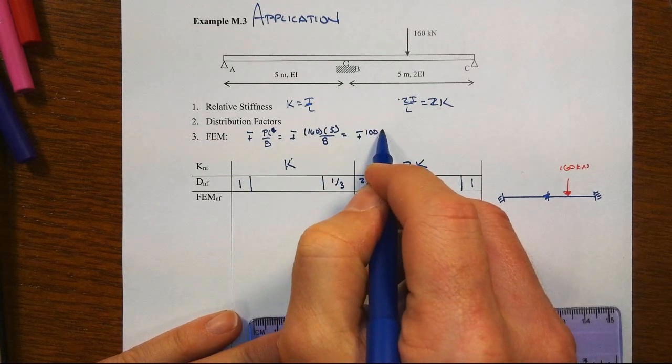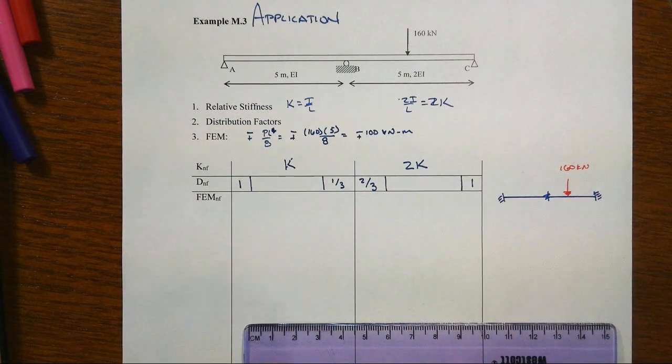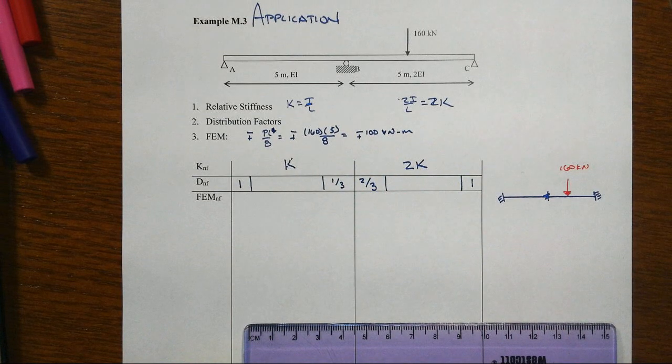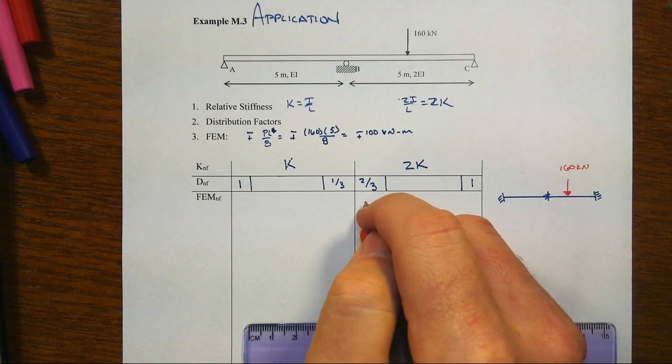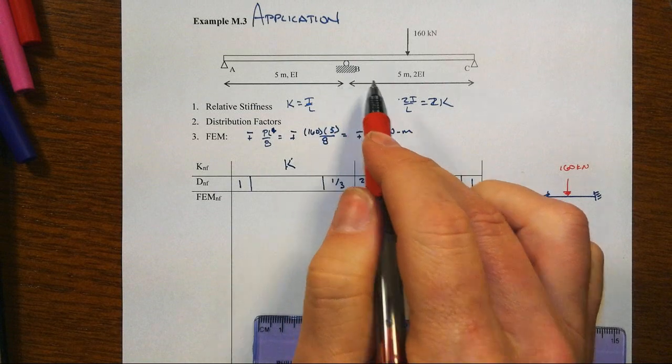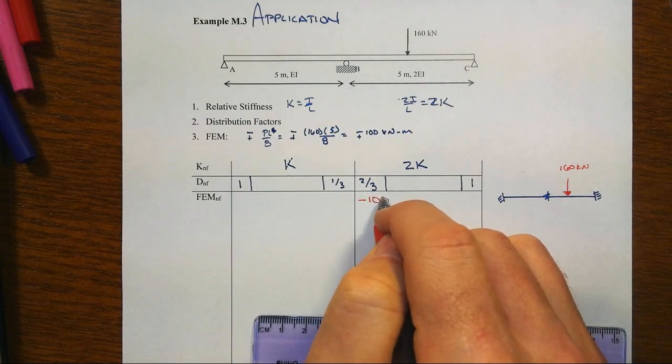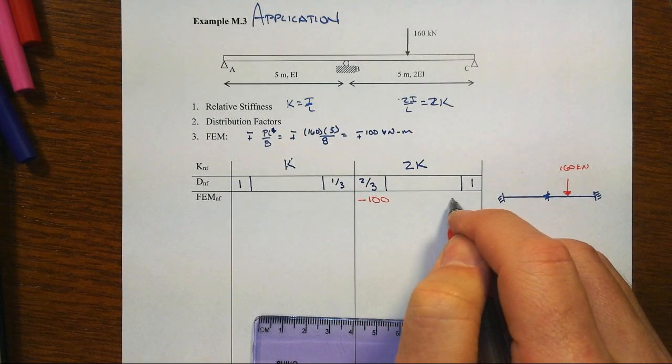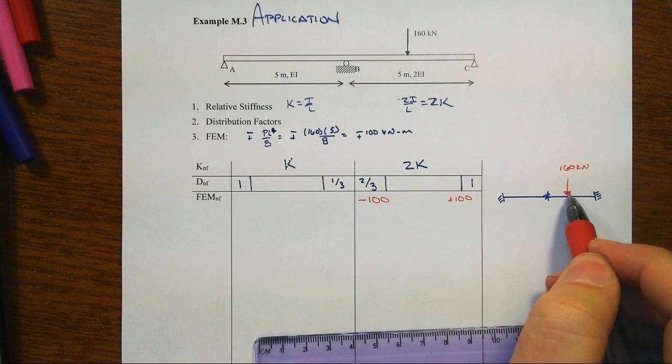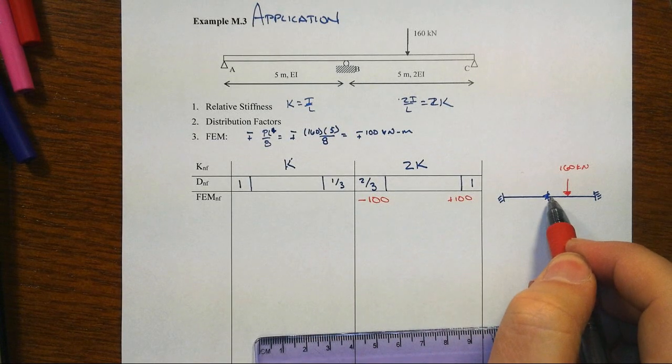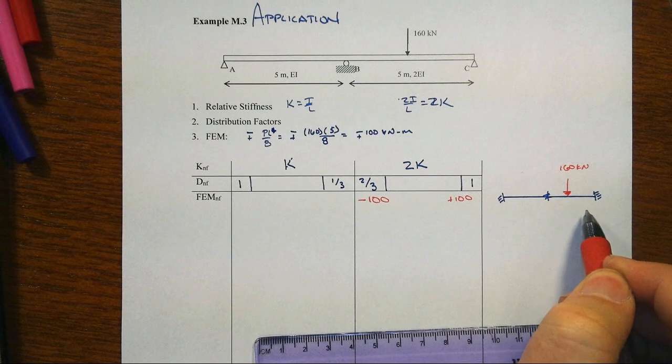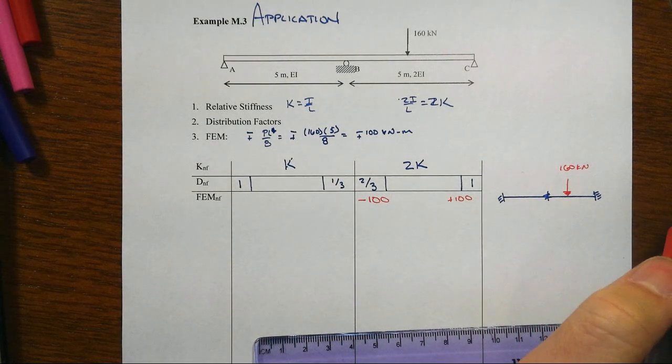And so when you do that, you will get then minus plus 160 times 5 over 8, so kilonewtons times meters. And we get minus plus 100 kilonewton meters. So we want to come down then in our table and put those in the right place. Left end of member BC, we have a minus 100. The right end, we have a plus 100. We have imposed a member load and created a moment here at each one of those joints of that kind of magnitude.